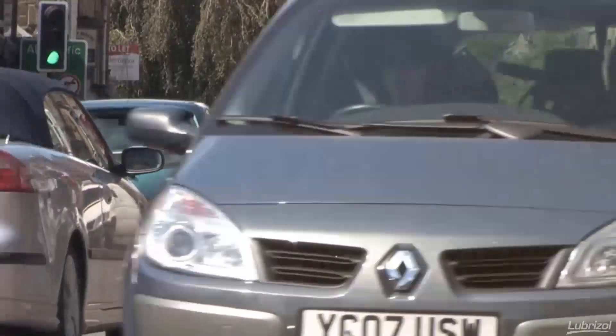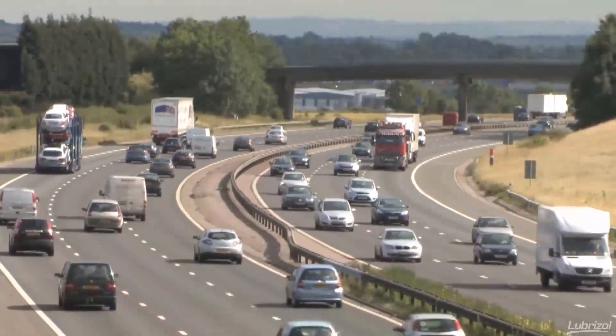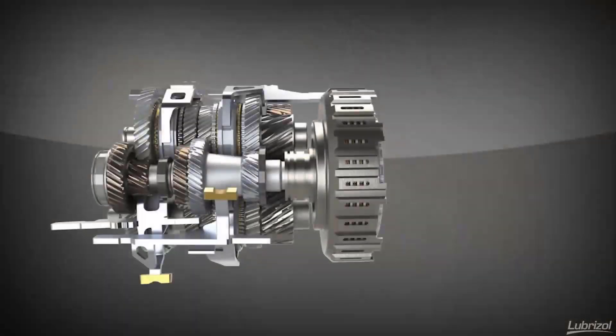Dual clutch transmissions, or DCTs, have become a popular transmission option for vehicle designers as they combine the gear efficiency of a manual with the shifting ease of an automatic. Here's how they work.